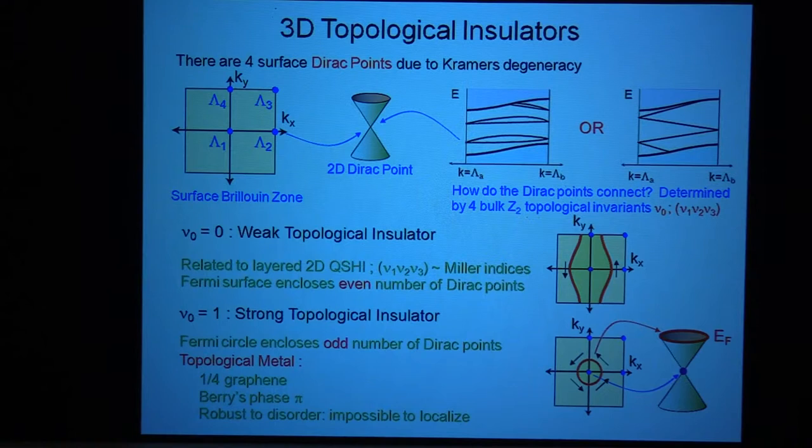And so three of these invariants, I think as Zahid mentioned to you yesterday, are really just characterizing what we call a weak topological insulator, where I can think of that as just layering two-dimensional topological insulators on top of each other, just forming a stack.